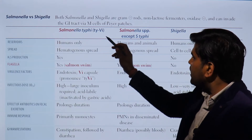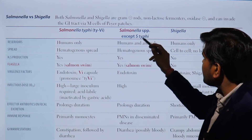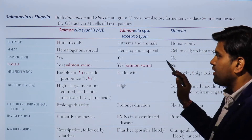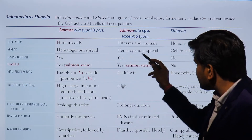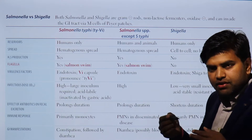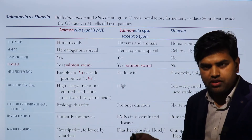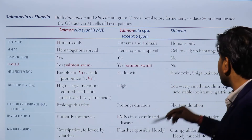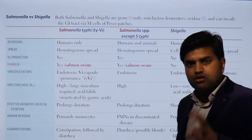Regarding reservoir: Salmonella typhi is found only in humans, while other Salmonella species are found in humans and animals; Shigella is found only in humans. Regarding spread: Salmonella can spread hematogenously (to the blood), whereas Shigella spreads only cell-to-cell and does not enter systemic circulation. Enteric fever and other Salmonella species can spread to the blood.